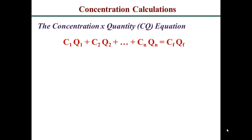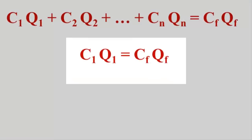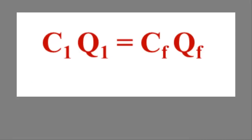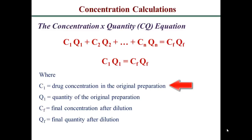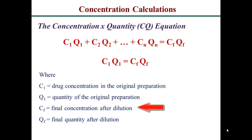If you had N sources it would be C1×Q1 + C2×Q2 + C3×Q3 + ... + CN×QN, and that should equal the final concentration CF times the final quantity QF — because mass cannot suddenly disappear. More often than not, these pharmaceutical calculations reduce to C1Q1 = CFQF, where C1 is the drug concentration in your original preparation, Q1 is the quantity of the original preparation, CF is the final concentration after diluting or concentrating, and QF is the final quantity.